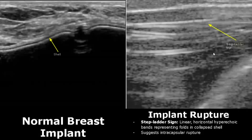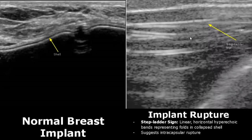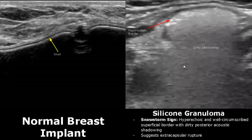A normal breast implant is anechoic with a double-layered hyperechoic shell, and these are the normal breast tissues. In an implant rupture we have a step-ladder sign — linear horizontal hyperechoic bands representing folds of a collapsed shell — suggesting intracapsular rupture. A silicone granuloma suggests extracapsular rupture and gives us a snowstorm sign. In this we have a hyperechoic circumscribed superficial border with dirty posterior shadowing. This shadowing is greyish.